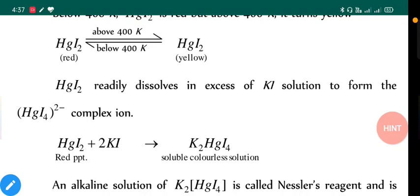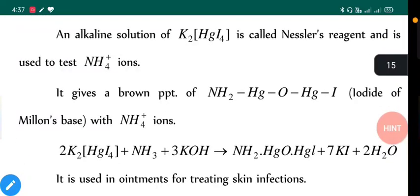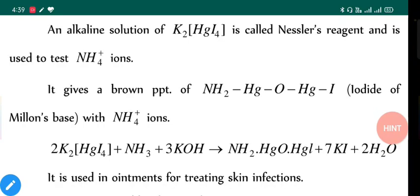An alkaline solution of K₂HgI₄ is called Nessler's reagent and is used to test NH₄⁺ ion. That means during inorganic qualitative analysis, when we have NH₄⁺ ion present as positive ion, then we can use Nessler's reagent to identify its presence. This compound will be used by us during inorganic qualitative analysis practicals.